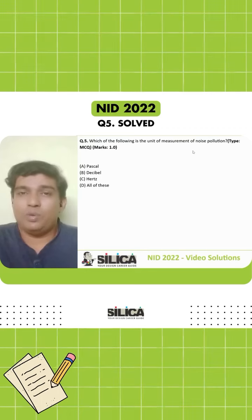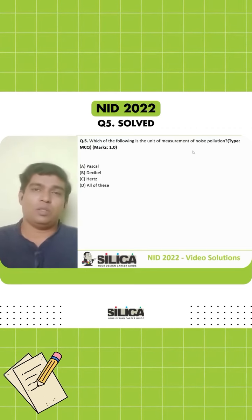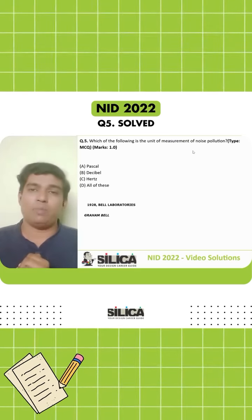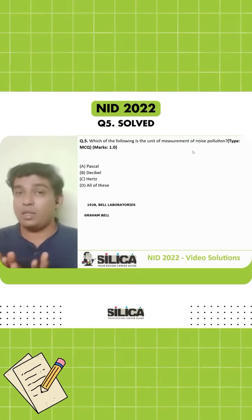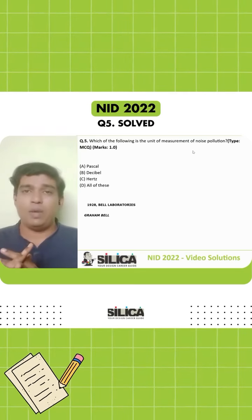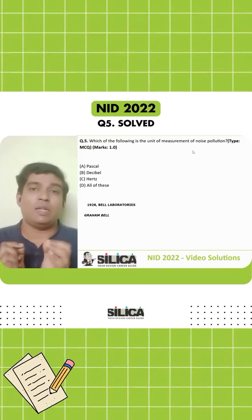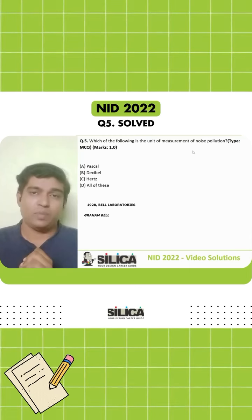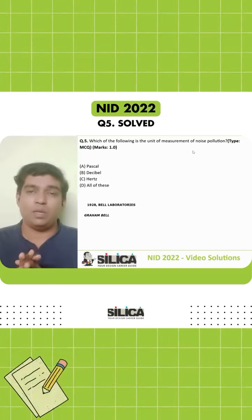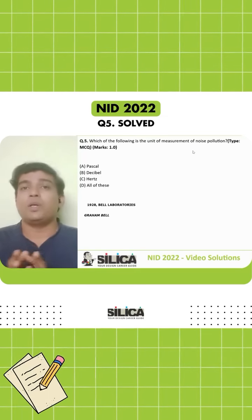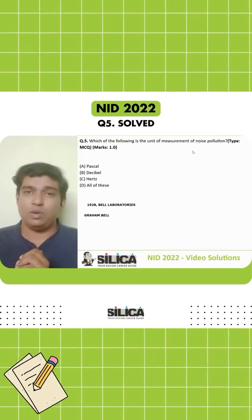All of these definitely cannot be the answer. So let's focus on the year 1928, winding our clocks back to the Bell Laboratories in North America, owned by none other than Alexander Graham Bell, who is credited with the invention of the telephone as well as the bell system of units. He is the person who has been honored — the bell has been named in his honor. So the answer for the noise pollution measurement unit is decibel.